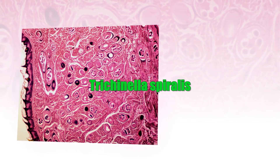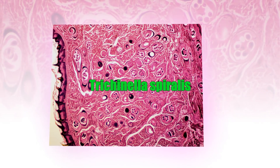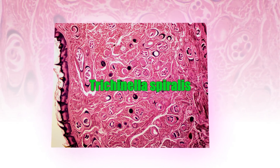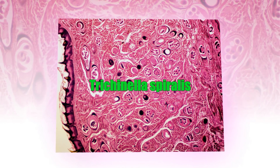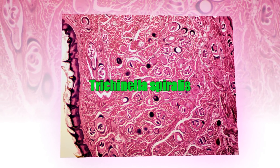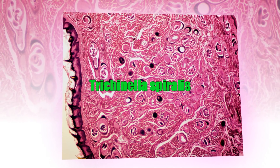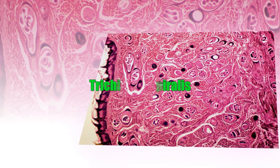Trichinella spiralis. Trichinella spiralis is a viviparous nematode parasite occurring in rodents, pigs, bears, hyenas and humans, and is responsible for the disease trichinosis. It infects people who eat the undercooked meat of infected animals, entering the human hosts as larvae-filled cysts.